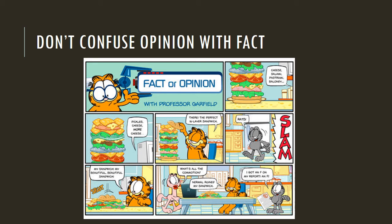Another major pitfall to critical thinking is confusing opinion with facts. So many people state their opinions as if they're facts, and it's really deceiving. Opinions are not facts, and almost all of us can be fooled into thinking someone's opinion is the same as fact. As Professor Garfield explains in this comic: in the first box, the sandwich ingredients — cheese, salami, pastrami, bologna — are clearly listed. You can see them. That is a fact.